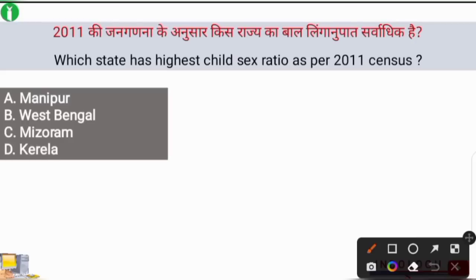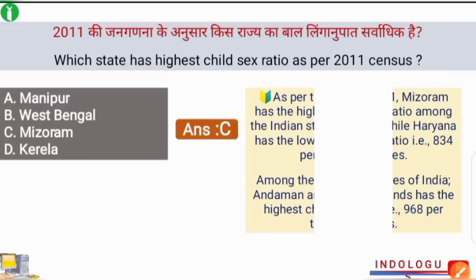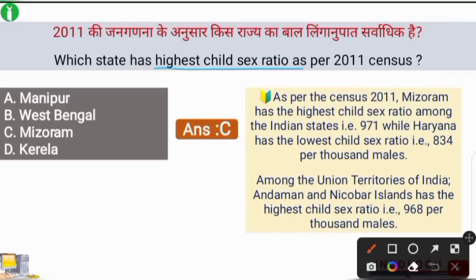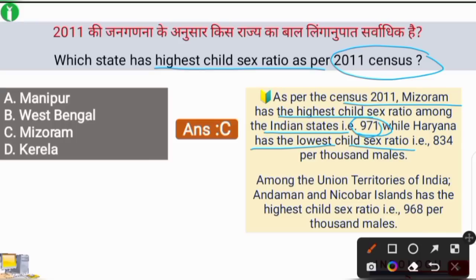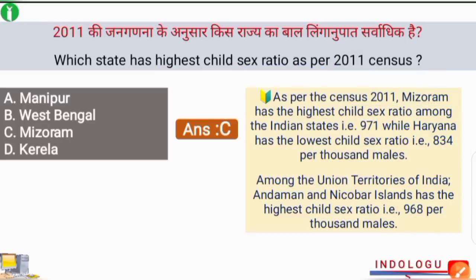Next question: which state has the highest child sex ratio as per the 2011 census? The correct answer is option C — Mizoram. Mizoram had the highest child sex ratio of 971 per 1000. Haryana had the lowest child sex ratio of 834 per 1000. Among union territories, Andaman and Nicobar Islands had the highest child sex ratio of 968 per 1000.